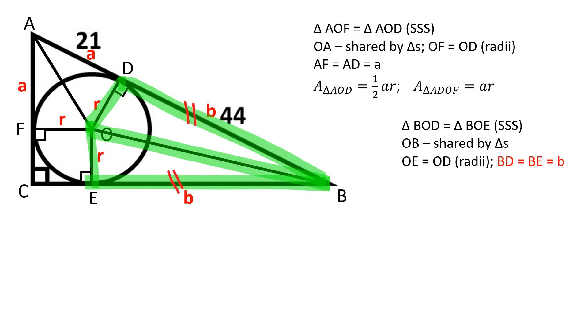BD is equal to BE and equals to B because two tangent segments that are drawn from the same external point are equal.